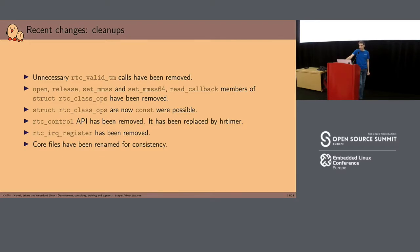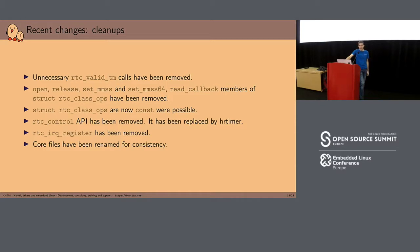Some people also tried to constify the rtc_class_ops inside the driver. That's important because those are callbacks — if an attacker ever had control over that structure, it could be used as a jump point to an attack payload. However, it was not always possible to do so, and I'll talk about that shortly. The RTC control API has also been removed — it had only one user, ASOC, and ASOC hadn't been using it since ages. It was already replaced by hrtimer in 2006.